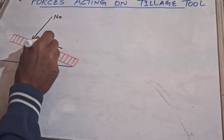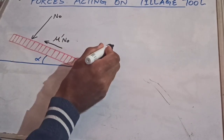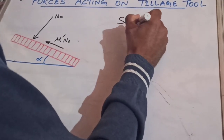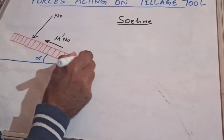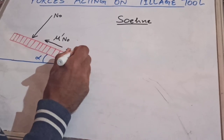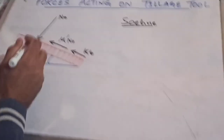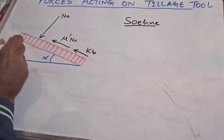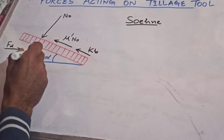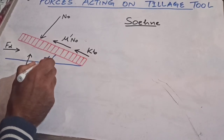Forces acting on the tillage tool include the normal force N0, and a soil-metal friction force mu-dash×N0 that opposes the motion of the tillage tool. There is also one more force given by Soehne, who said that soil offers a resistance known as soil cutting resistance, denoted by K×B, where K is the pure cutting resistance per unit width and B is the width of the tillage tool. There is also a draft force FD required to pull the tillage tool forward, and certain vertical reactions of the soil. These are the forces acting on the tillage tool inclined at angle alpha.